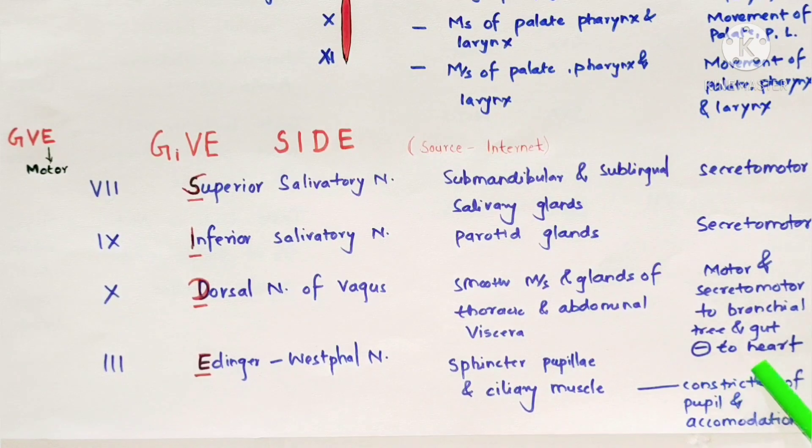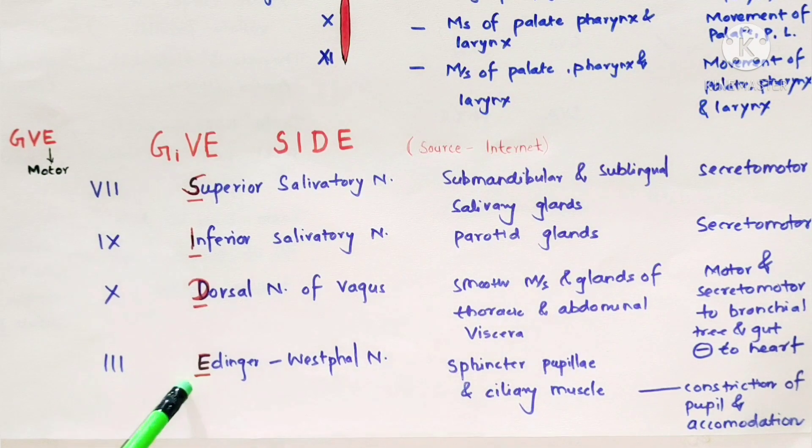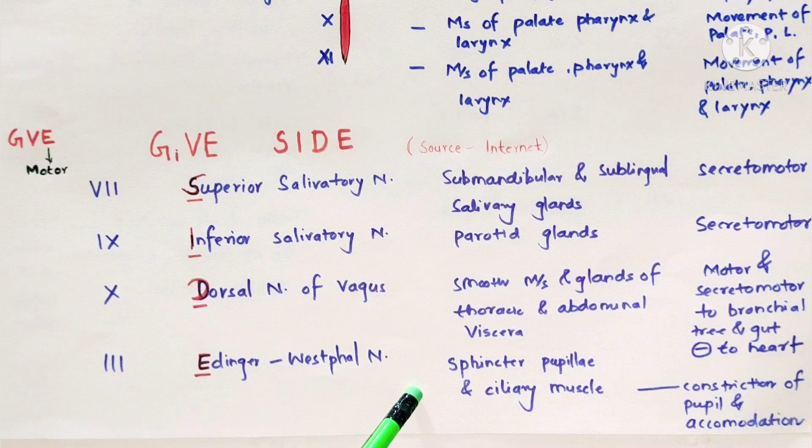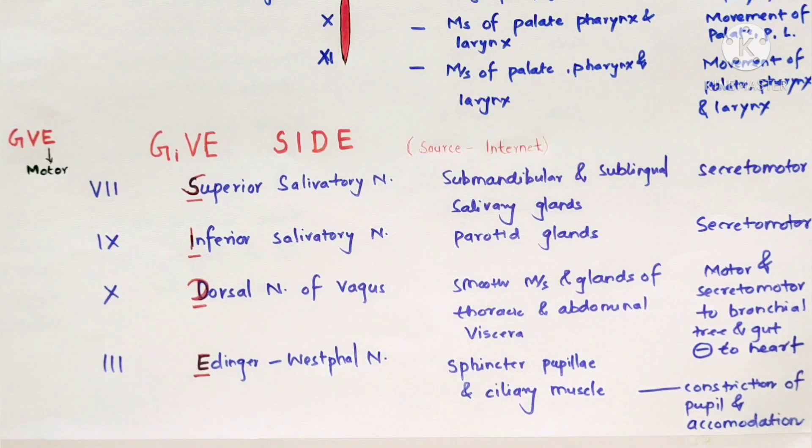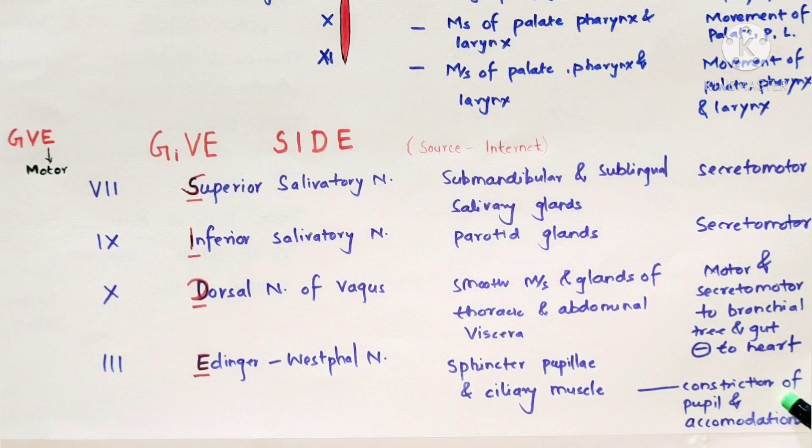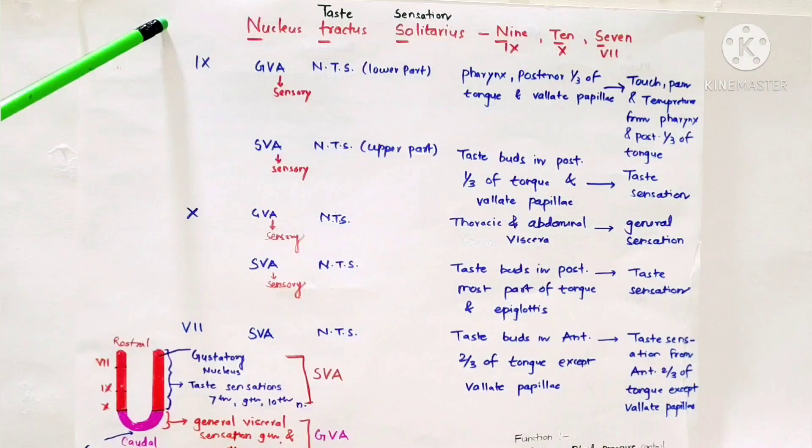The dorsal nucleus of vagus nerve supplies smooth muscle and glands of thoracic and abdominal viscera. Function is motor and secretomotor to bronchial tree and is inhibitory to heart.